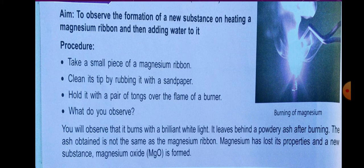You only have to know what changes you will observe from these activities, what things are required, and how chemical changes take place. This activity — the burning of a magnesium ribbon — is an example of a chemical change. You need to know what new things are formed in this activity.